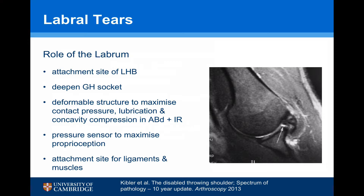The role of the labrum is not only as an attachment site of the long-headed biceps and deepening the socket as we tend to normally understand, but also has other roles. It's a deformable structure to maximise contact pressure, lubricate, and increase concavity compression as the arm comes up into abduction and external rotation. It can act as a pressure sensor to maximise proprioception, and it's also an attachment site for other ligaments and muscles.